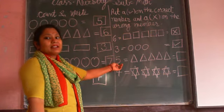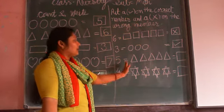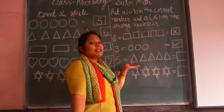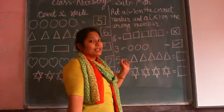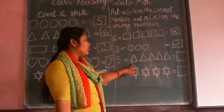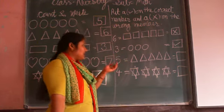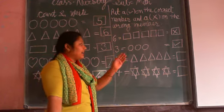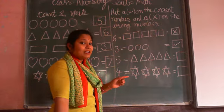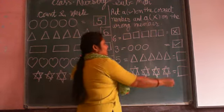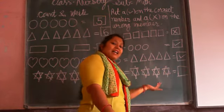Which number is this? This is number 5. Now this shape is triangle. Count it — how many triangles are here? 1, 2, 3, 4, 5. Five triangles. Here number 5 and here 5 triangles. So this is right or wrong? Right. Very good. Number 5 is written and there are 5 triangles, so this is right.